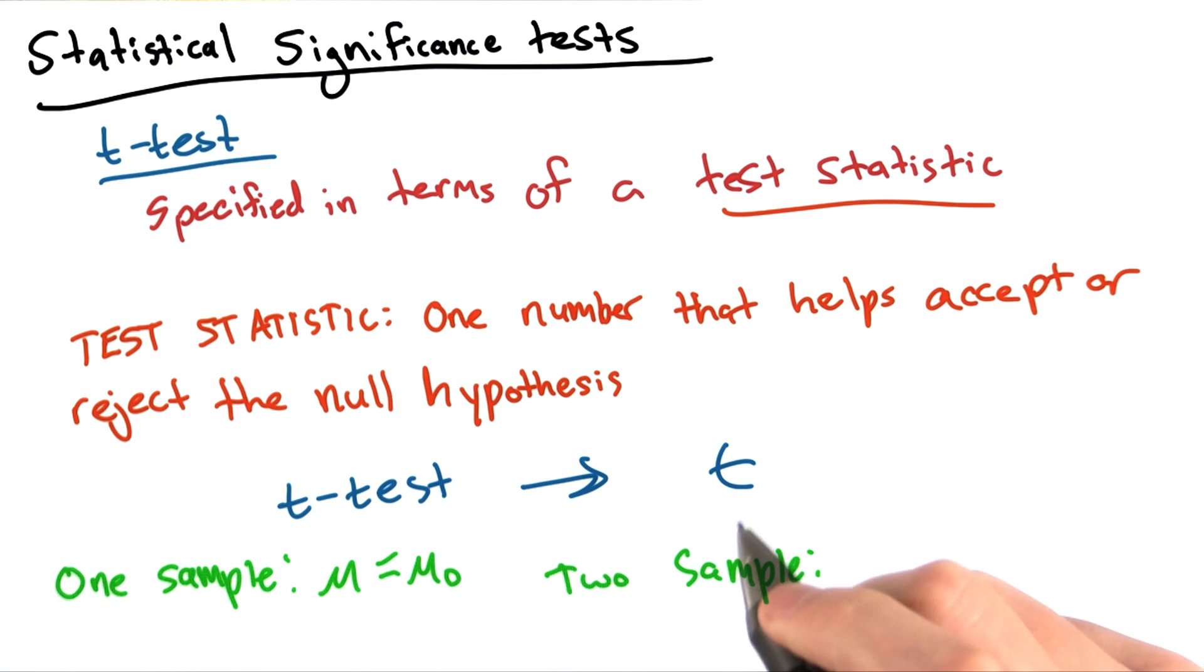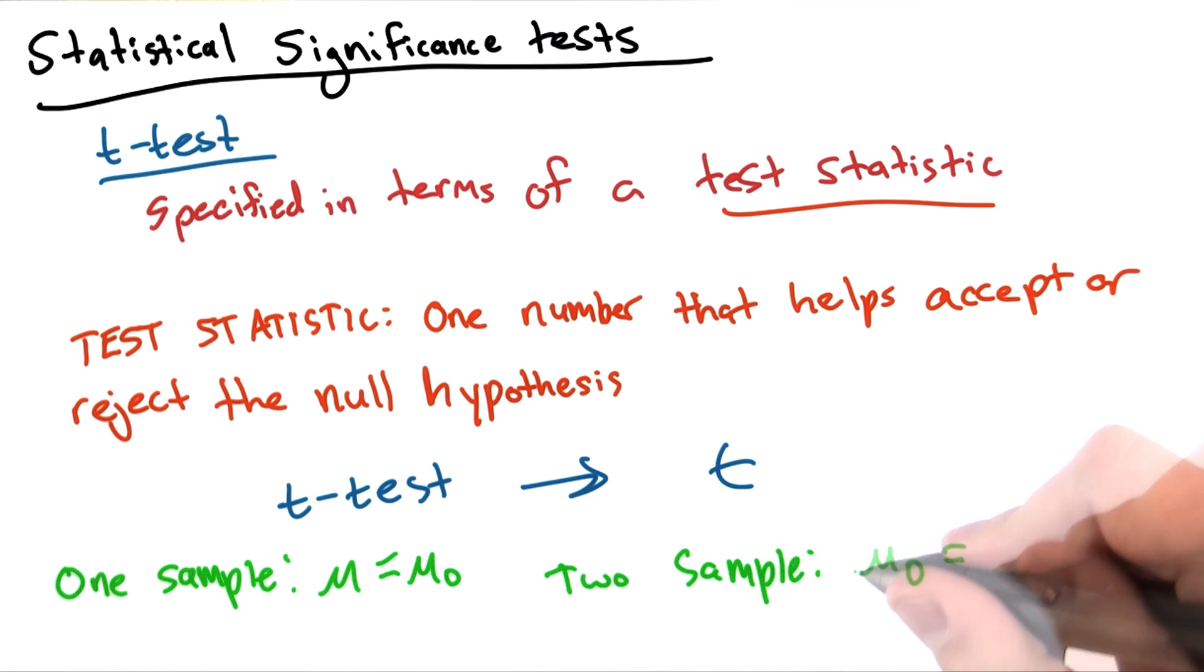In the two sample case, which we'll be more concerned about for the purposes of our example, the null hypothesis would be that our two population means, mu naught and mu1, are equal.